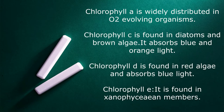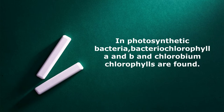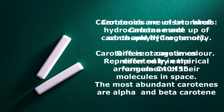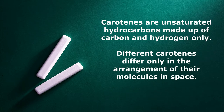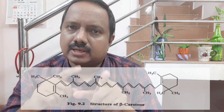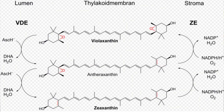Similarly, chlorophyll C is present in brown algae, chlorophyll D in red algae, and chlorophyll E in Xanthophyceae. In photosynthetic bacteria, bacteriochlorophyll A and B and chlorobium chlorophylls are formed. In addition to these chlorophylls, there are carotenoids and xanthophylls. Carotenoids are pigments containing carbon and hydrogen only — unsaturated hydrocarbons — and there are alpha and beta carotenoids that differ only in the spatial arrangement of their molecules. Xanthophylls are oxygenated derivatives of carotenoids; the common ones are lutein, zeaxanthin, neoxanthin, and violaxanthin.